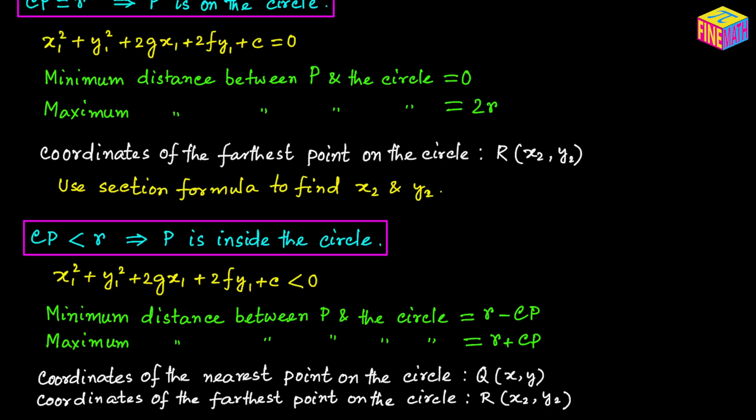One more point: if CP = 0, then P coincides with the center of the circle, meaning P is inside the circle and its coordinates are exactly those of the center. So if you ever find that CP = 0, point P is coinciding with the center. I hope everything made sense. Thank you for watching — see you in the next video.